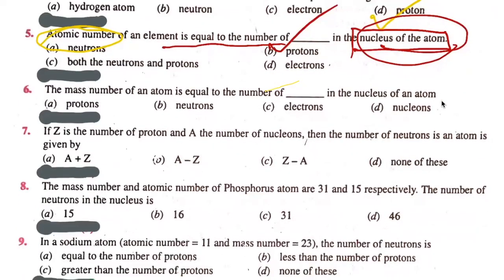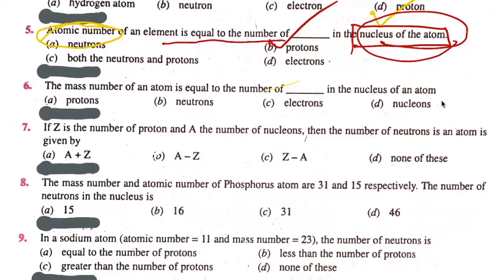The sixth question: The mass number of an atom is equal to the number of dash in the nucleus of an atom. The answer is nucleons. Option B — nucleons is correct.